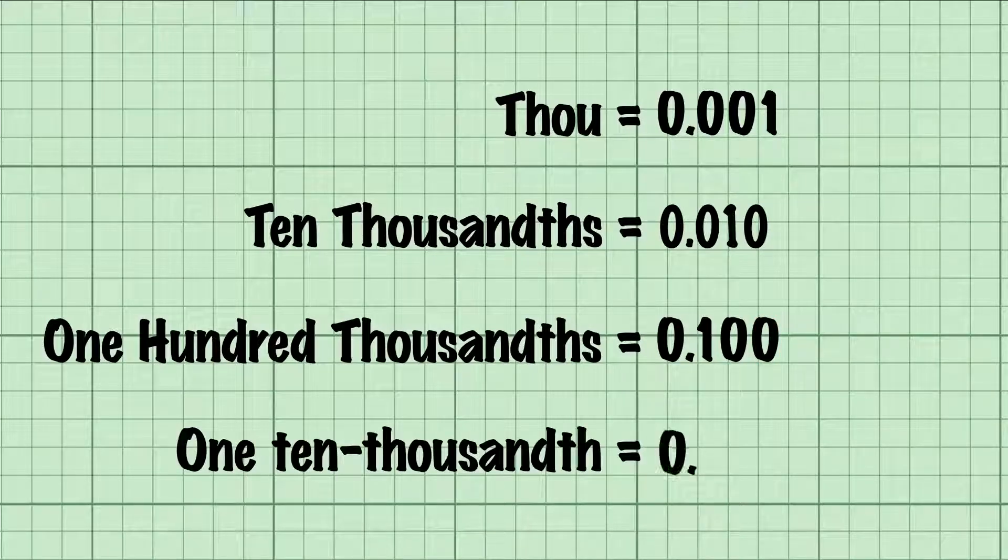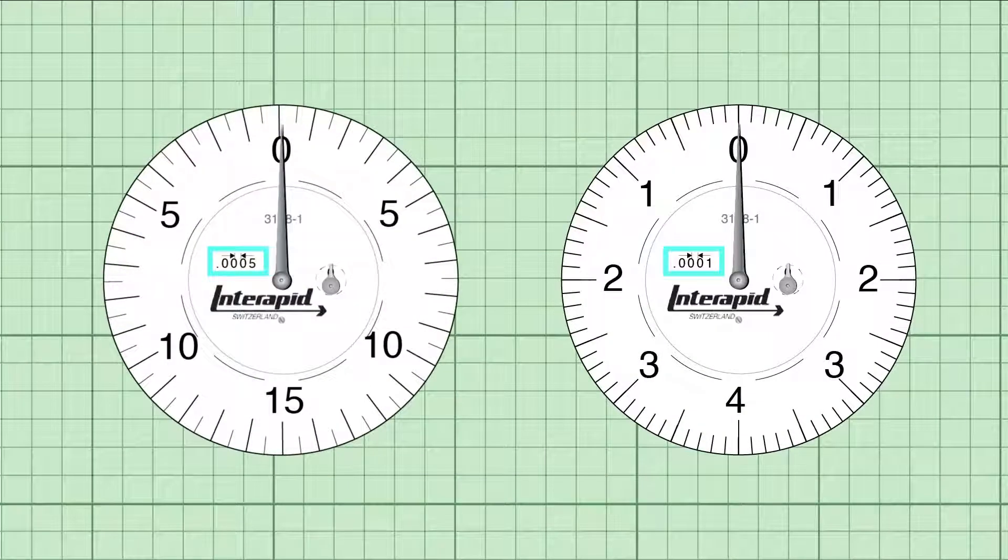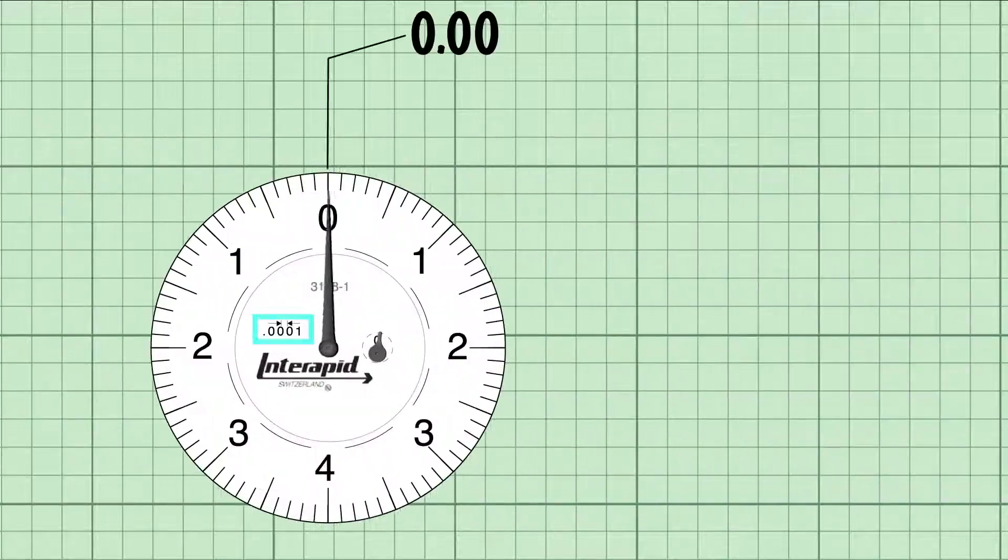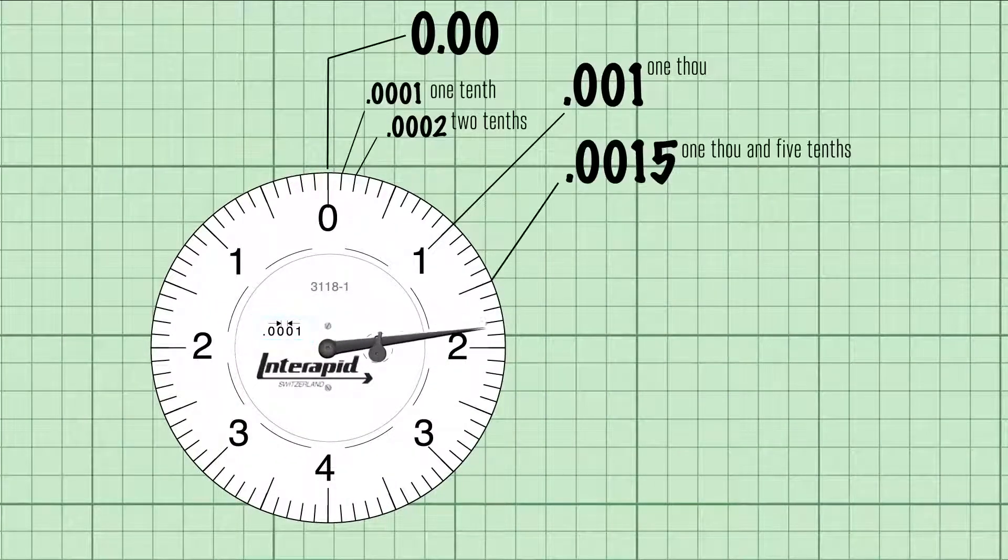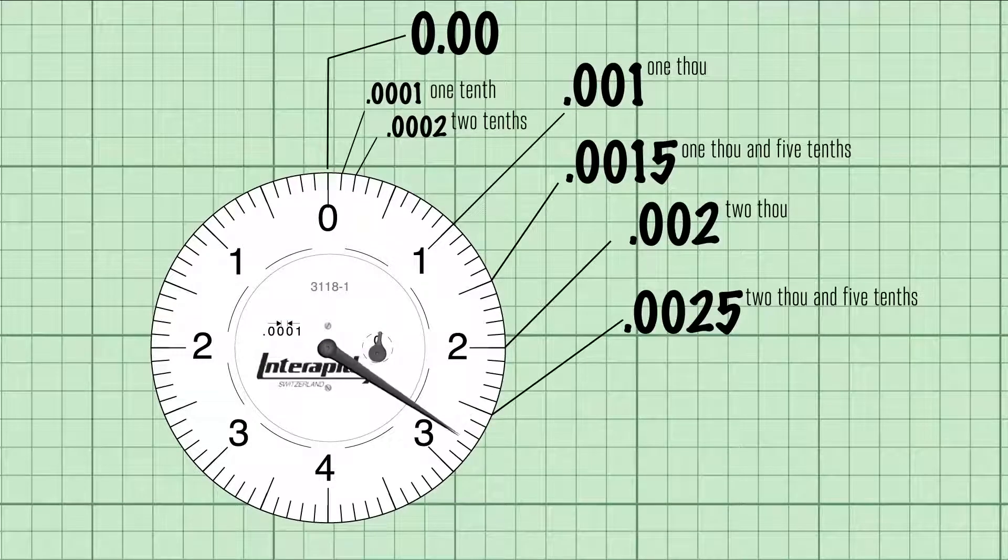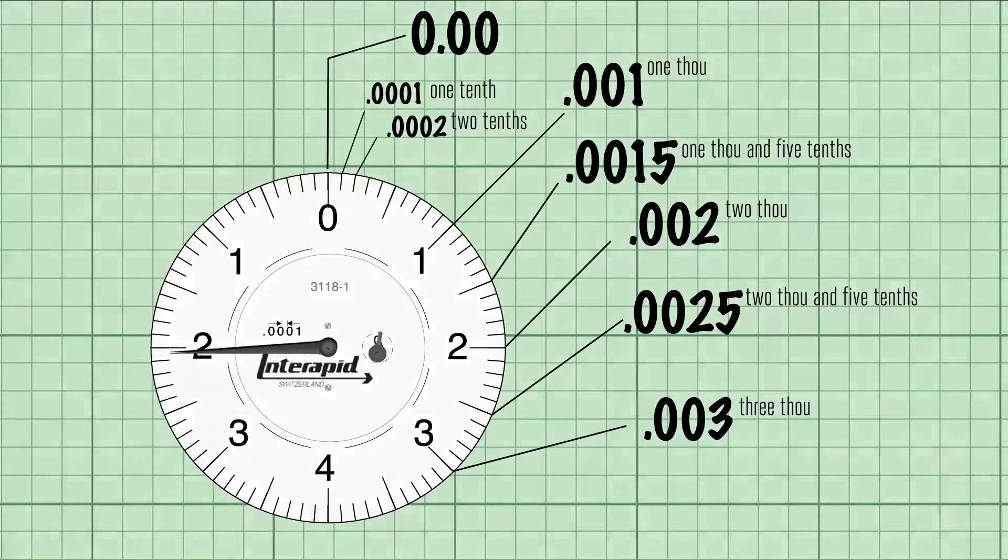Going the other way, a tenth, or ten thousandths, looks like this. Test indicators are commonly available with either five tenths or one tenth graduations. The dial of a one tenth indicator is broken up into units of a ten thousandth of an inch, or .0001. As the needle moves, each tick measures less than a hair's worth of travel. It's that precision that makes these tools so valuable.